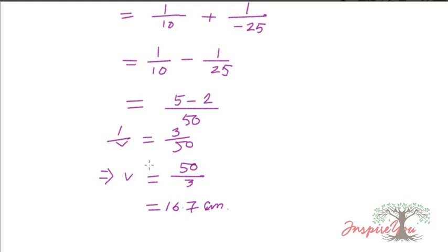The image distance v is 16.7 centimeters. The positive sign confirms that the image is formed on the other side of the lens, which means it is a real image. Now to find the size of the image, we use the magnification formula.